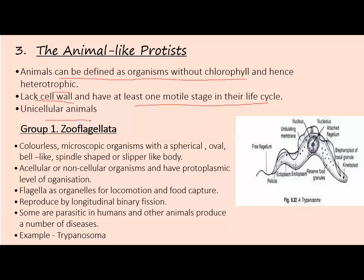There are four groups of animal-like protists. The first group is Zooflagellates. They are colorless microscopic organisms with spherical, oval, bell-like, or spindle-shaped body forms. They are acellular and non-cellular organisms — acellular means they are at a protoplasmic level of organization, and non-cellular means they exist without a true cell structure.